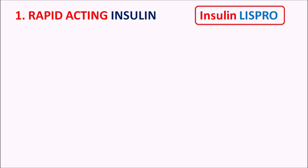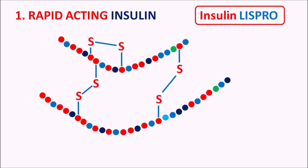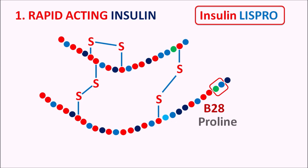Insulin lispro is obtained by modification of the amino acid sequence at B28 and B29. Proline is present at B28 and lysine at B29 — their sequence is switched at positions 28 and 29 to produce insulin lispro.